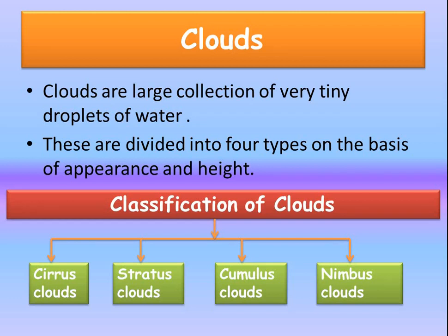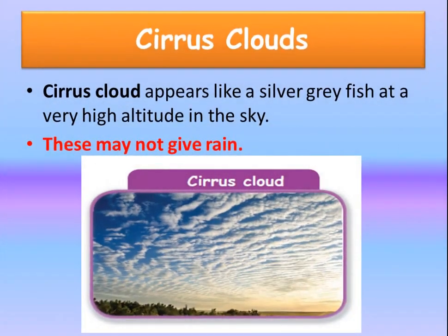I am sure children, you would have seen this formation of clouds in the sky. The cirrus clouds appear like a silver grey fish at a very high altitude in the sky. These may not give rain — it is appearing at a very high altitude, so they are not going to give us rain.